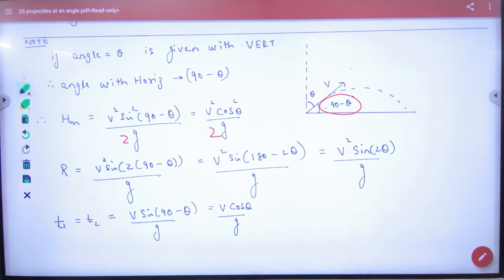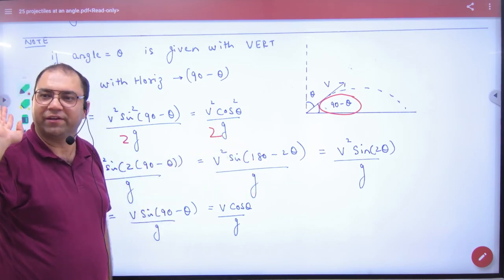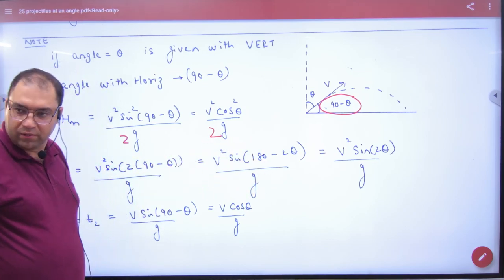But one thing is good: range remains the same. We did the same. When the angle of projection is either theta or 90 minus theta, it remains the same. Is there any doubt in it? Clear? Next.